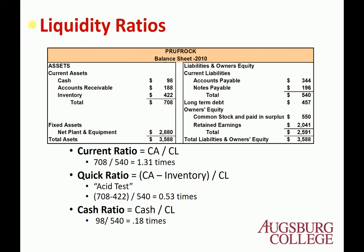Number one: liquidity ratio. Chapter 2 introduced the concept of liquidity. Liquidity means that if you can convert an asset into cash without losing value, the asset is liquid. A company is liquid if it can cover its current liabilities using enough liquid assets. They should have enough liquid assets to cover their short-term liabilities.